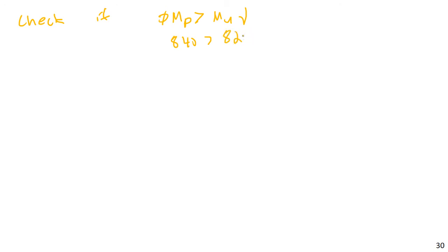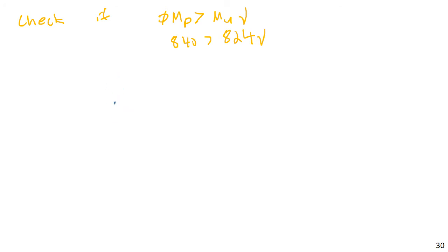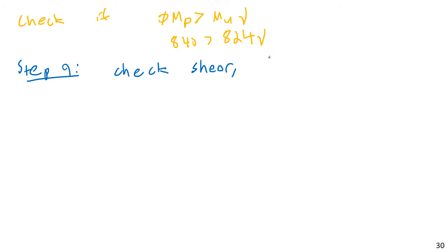Step 9: check everything else. This includes shear, deflection, web crippling, and web yielding. The reason I lump all this into one step is that usually this stuff won't control. I've already shown you how to do shear calculations — those aren't very difficult — so I'll leave that as an exercise. What I'd like to run through is the deflection calculation.